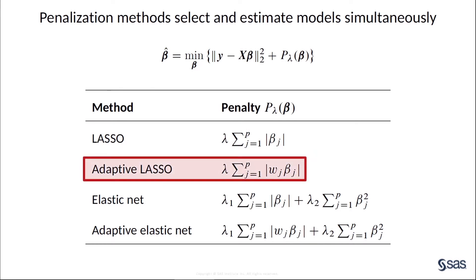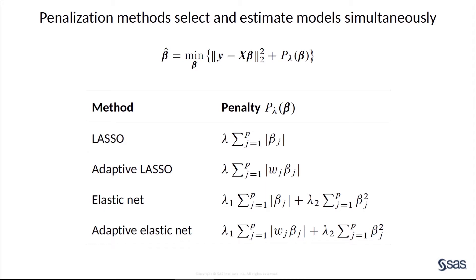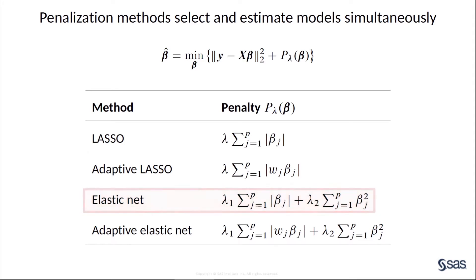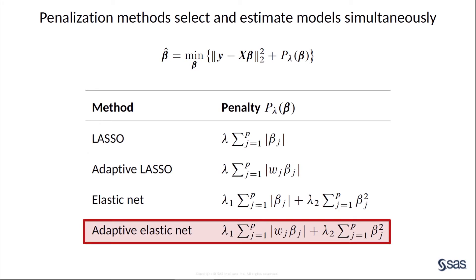In adaptive lasso, the weights W are used to ensure good statistical performance. They impose large penalties on unimportant predictors and small penalties on important predictors. There are two parts to elastic net selection: the L1 penalty and the L2 penalty. The L1 penalty performs variable selection by setting some coefficients to exactly zero, and the L2 penalty encourages group selection by shrinking the coefficients of correlated variables towards each other. You can also define adaptive elastic net by adding adaptive weights to the L1 penalty.